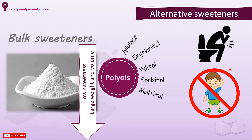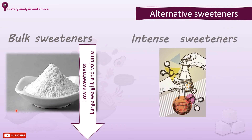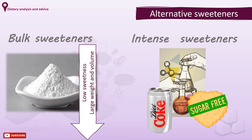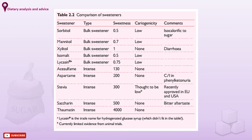Bulk sweeteners are isocaloric with sucrose, meaning they provide the same amount of calories. Intense sweeteners, on the other hand, are many times sweeter than sugar and can be used in much smaller amounts. They are classed as food additives and added to foods to replace sugar, providing low-calorie, low-energy, or even sugar-free foods. This table shows different sweeteners, their degree of sweetness, level of cariogenicity, and any relevant comments. Note that sucrose has a sweetness degree of 1, the same as xylitol.